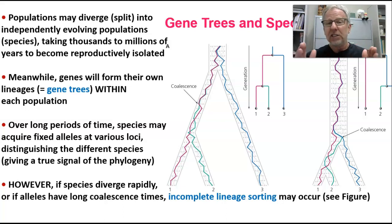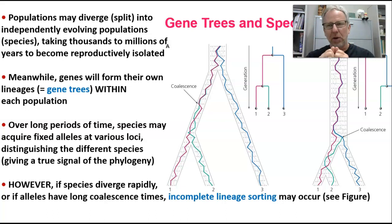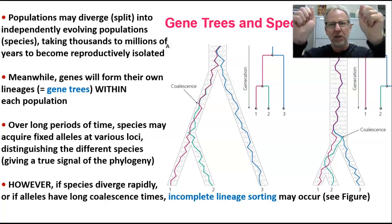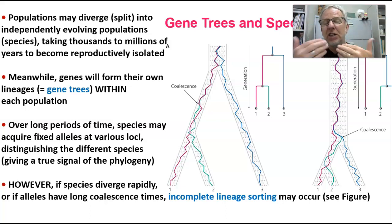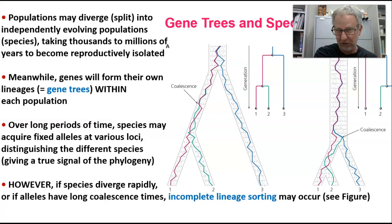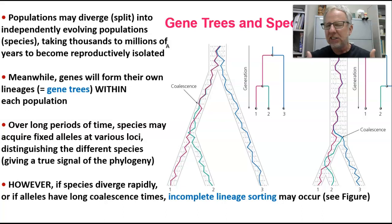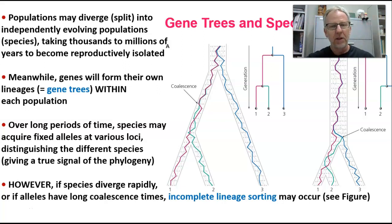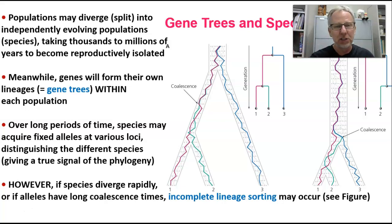If species have relatively long times between their speciation events — between the times that populations are splitting and diverging and turning into new species — then the gene trees might have a very good chance of matching up with the species trees, and we can use the gene trees to accurately estimate the species trees. But if species diverge rapidly, if lineages are splitting pretty quickly, then incomplete lineage sorting might happen. Incomplete lineage sorting occurs when gene trees do not match species trees.